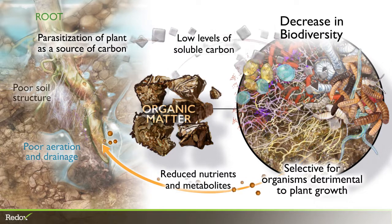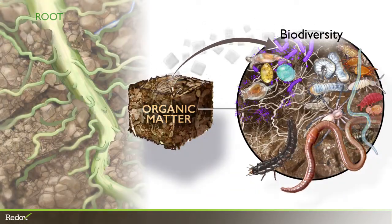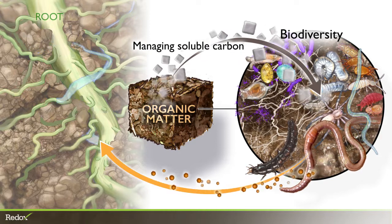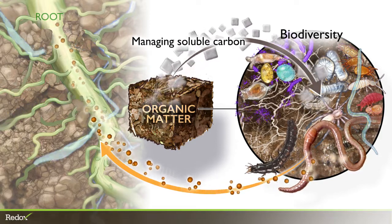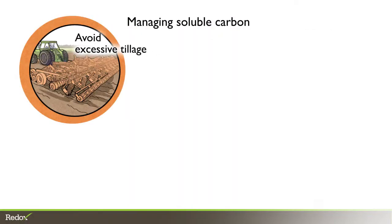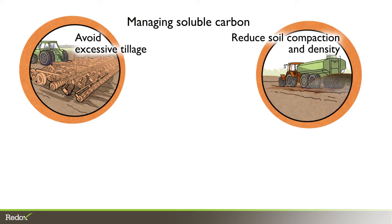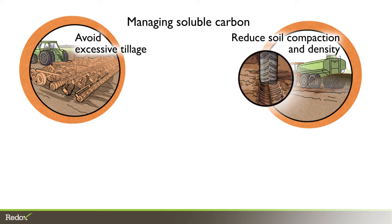The key to turning these effects around and fostering plant-favorable soil life is managing the relative availability of soluble carbon through such practices as avoiding excessive tillage, which prevents oxidation of organic matter, reducing effects of soil compaction and increased soil density that is typically caused by agricultural machinery and other agronomic practices.